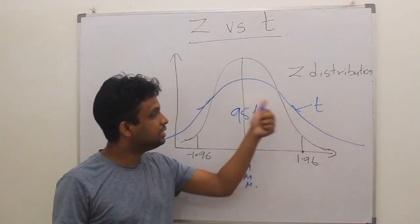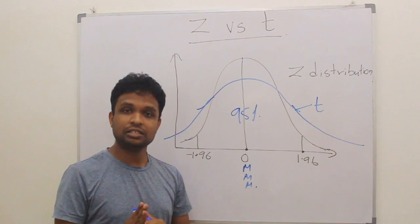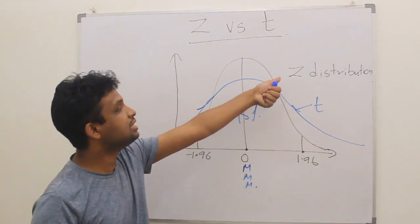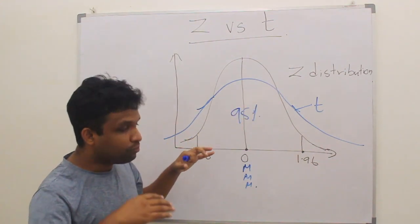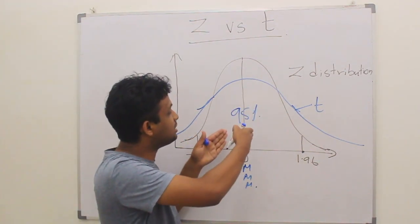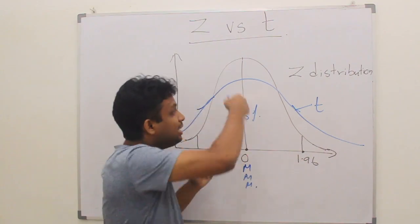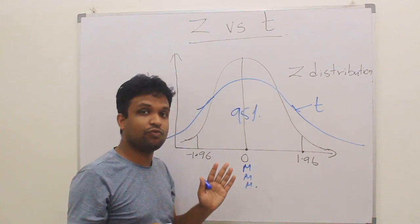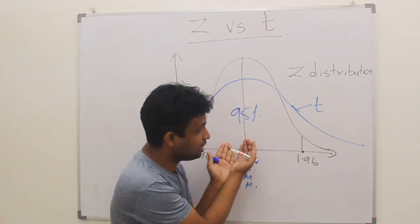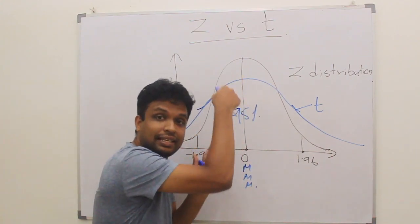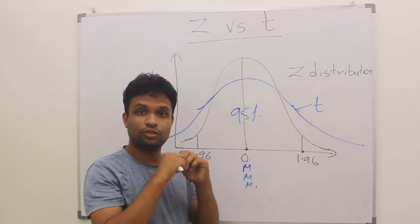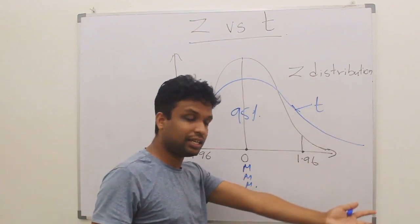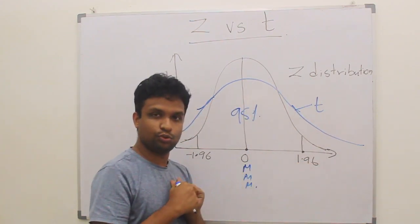This is the T-distribution. Now, think about the 95% of the individuals. Unlike in Z-distribution, the number of individuals in T-distribution at the center are less than the Z-distribution. But still, T-distribution is a normal distribution where most of the individuals are at the center, just less than the Z-distribution. So individuals towards the tails are slightly higher than the Z-distribution.